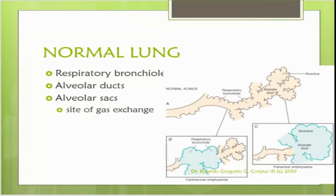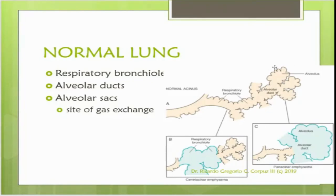There are two parts of the respiratory system: the conduction system and the respiratory system. The conduction part involves only the movement of air — oxygen or carbon dioxide — with no exchange of gases. But once you enter the respiratory part, there will be exchange of gases. The respiratory bronchioles are the first part of the respiratory portion, going to an alveolar duct, an alveolar sac, and the alveolus. The alveolar sac is the main site for gas exchange, where oxygen enters the blood and carbon dioxide is excreted.